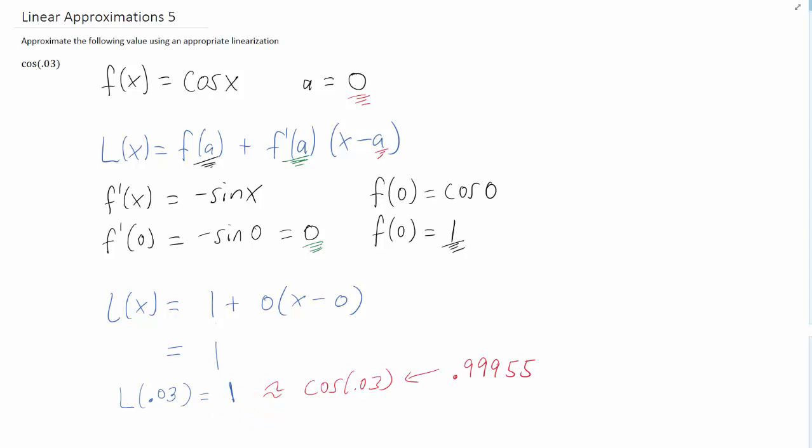So I guess that's all we have to do. We approximated the value of cosine of 0.03 using a tangent line that happened to just turn out to have the equation 1.